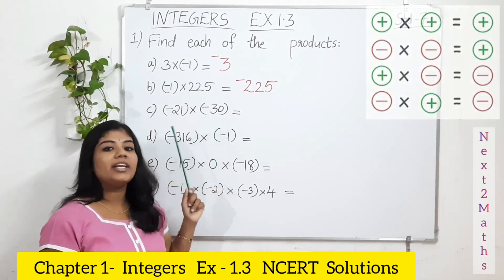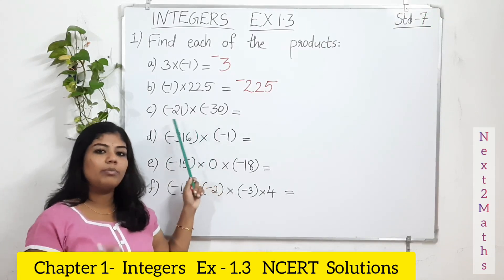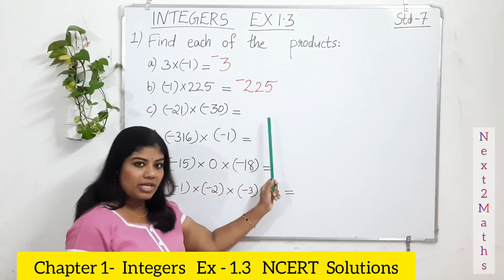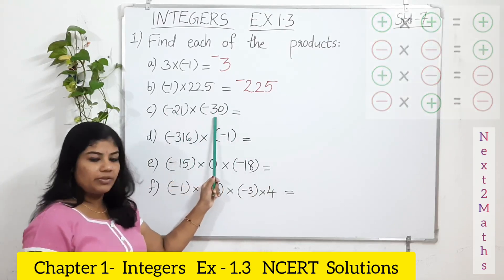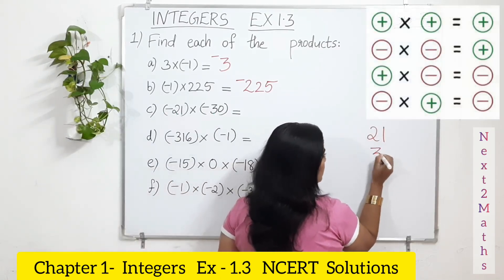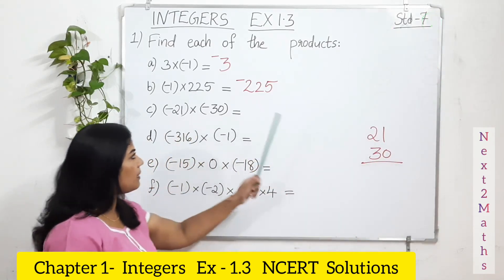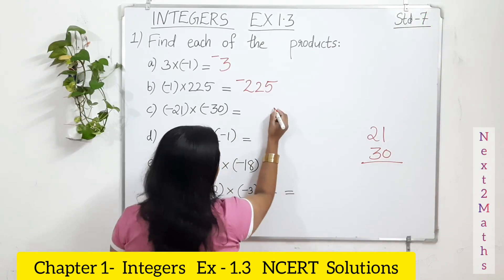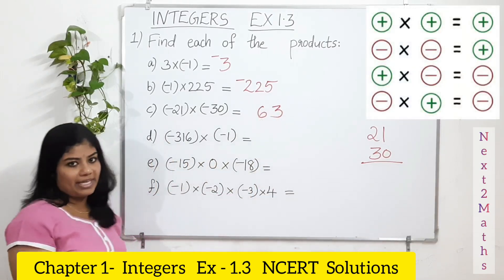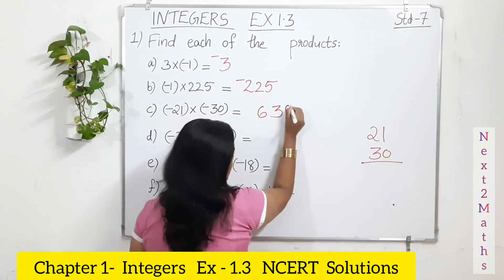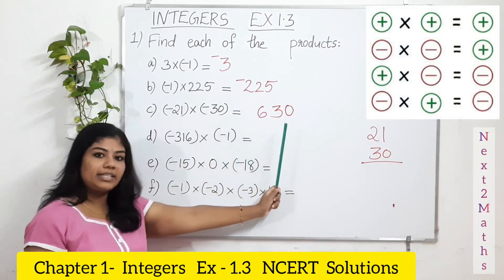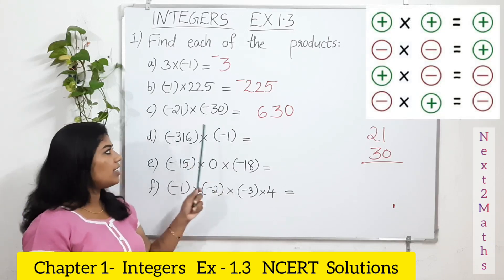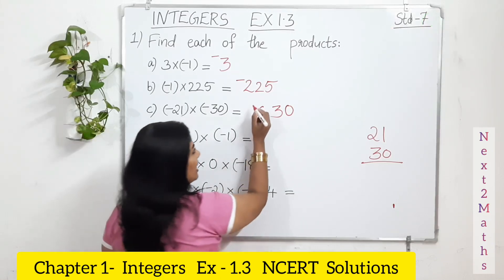Next: negative 21 and negative 30. Here both numbers are negative. So just take the numbers, multiply and write your answer first. 21 multiplied with 30 — you will get 630. Now, negative times negative: if both numbers are negative, your result will be positive. So your answer is positive 630.